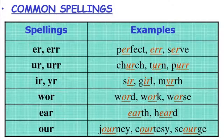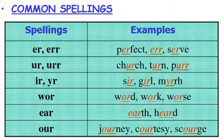زي الكلمات: church، turn،pur. الحروف I-R وY-R: sir، girl، mer. الحروف W-O-R: word، work، worse. الحروف E-A-R: earth، herd. الحروف O-U-R: journey، courtesy، scourge. دي الحروف اللي بتكونلي هذا الصوت.